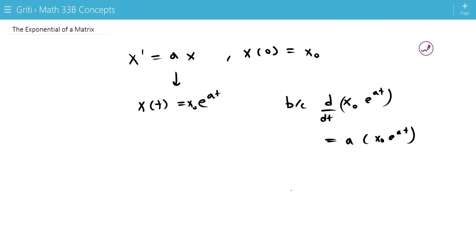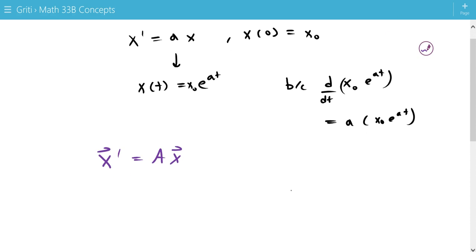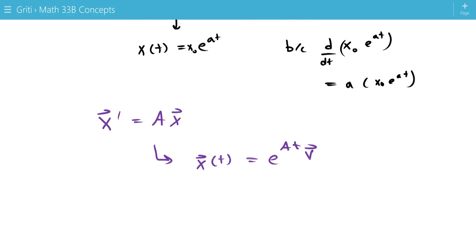So, now with our system, x prime equals ax, where a is a matrix. We also would like to express x of t as e to the at times some vector v. v is the eigenvector, of course.